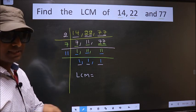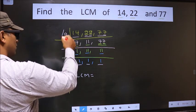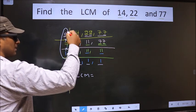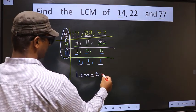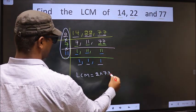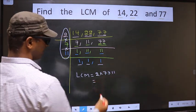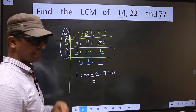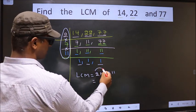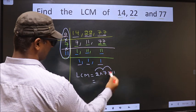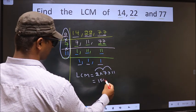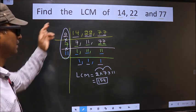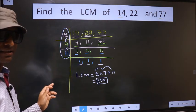LCM is the product of these numbers. Product of these numbers. That is 2 into 7 into 11. Let us multiply these numbers. That is 2 into 7, 14 into 11, 154 is our LCM. Am I clear?